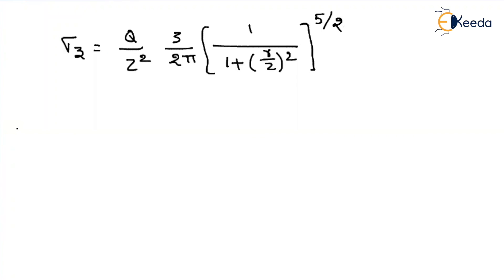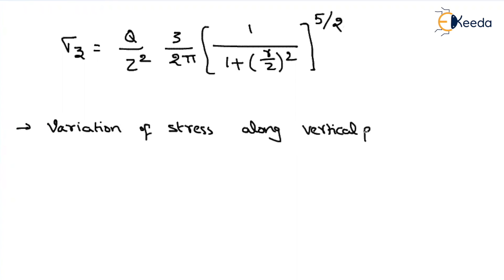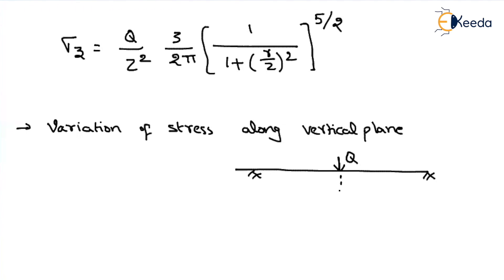Now let us see how the stress will vary — that means variation of stress along the vertical plane. Let us consider the soil mass and the ground surface, and assume that a vertical concentrated load is applied. For simplicity, let us first see how the stress is varying along the vertical plane under the line of action of the load.